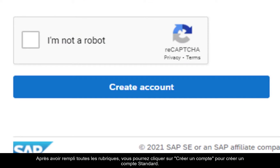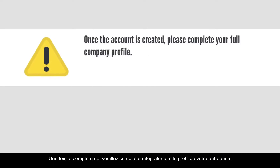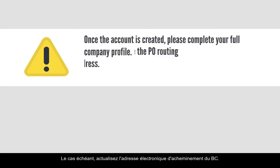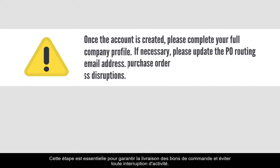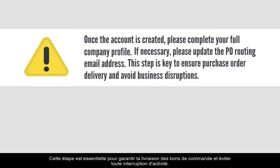After completing all the sections, click on 'Create Account' to create a standard account. Once the account is created, please complete your full company profile. If necessary, update the PO routing email address. This step is key to ensure purchase order delivery and avoid business disruptions.